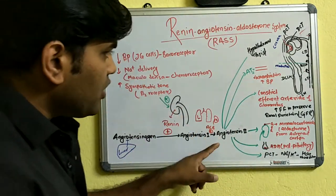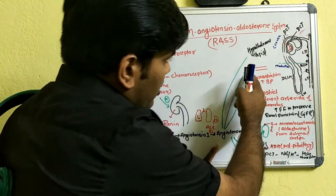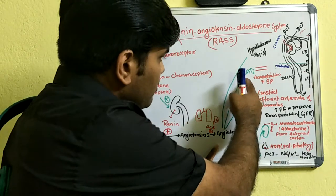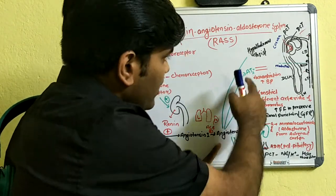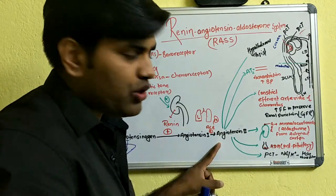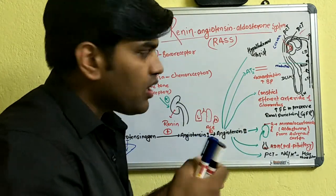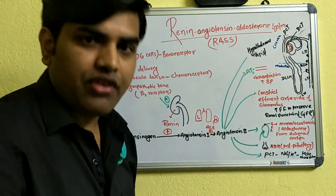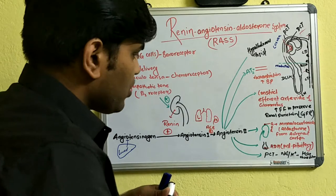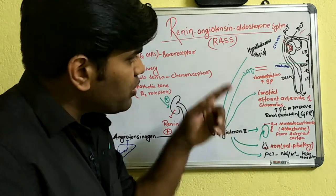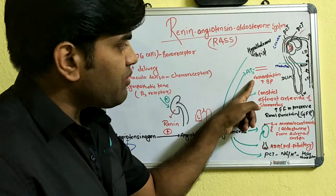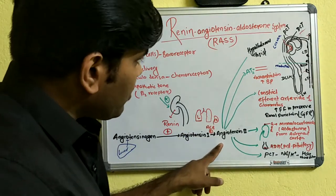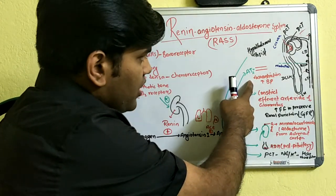Angiotensin-2 performs several important functions. First, since there is decreased blood pressure, angiotensin-2 acts on angiotensin type-1 receptors on vascular smooth muscle, causing vasoconstriction. This increases peripheral resistance, and since blood pressure equals cardiac output times peripheral resistance, increasing peripheral resistance increases blood pressure.